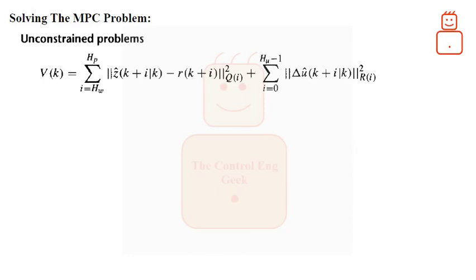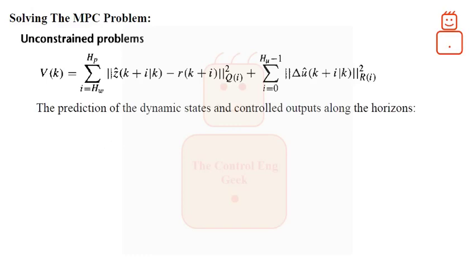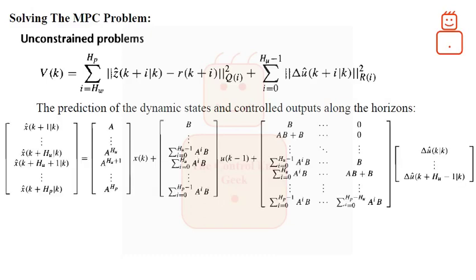Now, with the defined matrices and vectors, it is time to combine the process model into the cost function. To do that, we have to remember that our MPC problem has to satisfy the given model at any time in the future. As we have seen in a previous related video, the prediction of the future states, based on the repeated application of the process given model, is given by.